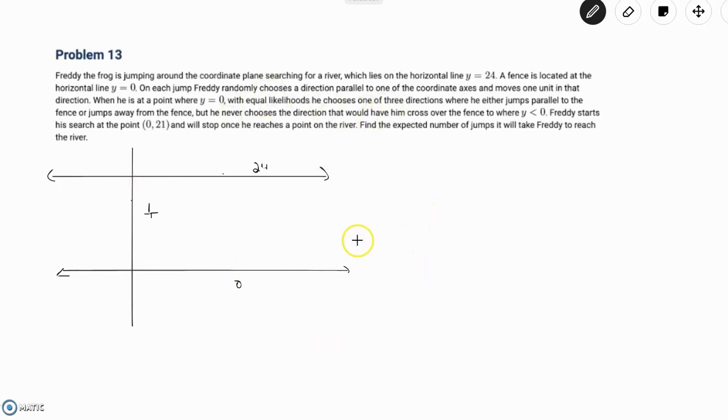So we can just say that he stays put with probability one-half for all points n that are less than or equal to 23 and greater than or equal to 1, because n equals 0 is a special case. So if he stays put, let's call E(n) the expected number of jumps it will take from point n to reach the point y equals 24. So we see E(n) is equal to one-half times E(n) plus one, plus one-fourth. If he moves down, it would be times E(n minus 1), plus one, and plus one-fourth times E(n plus 1), plus one.